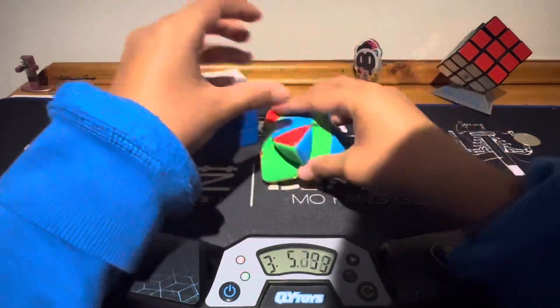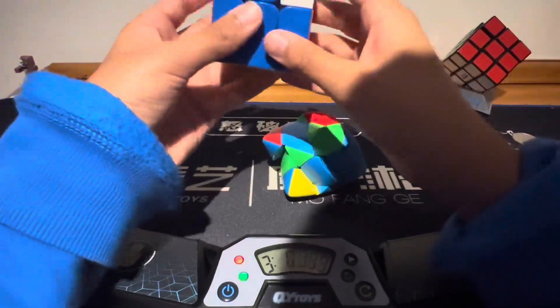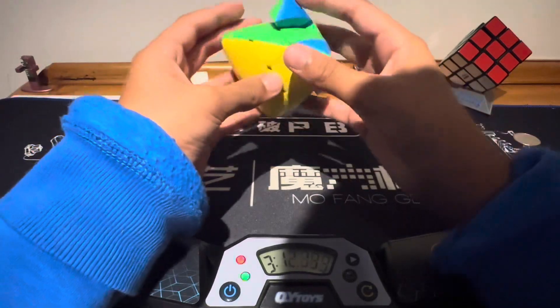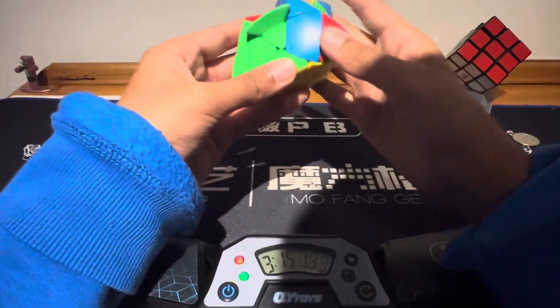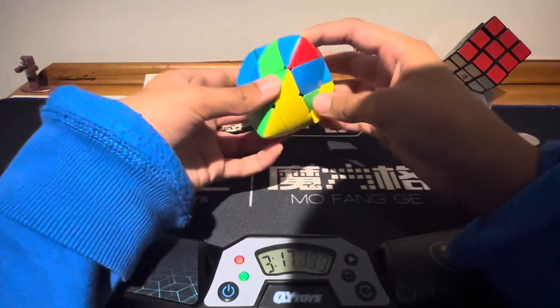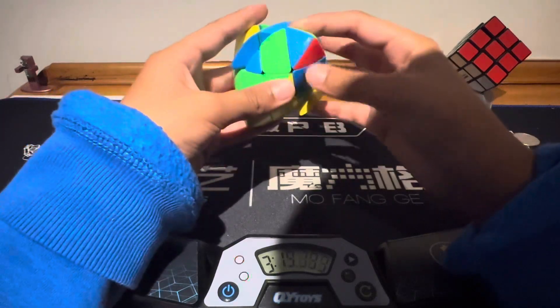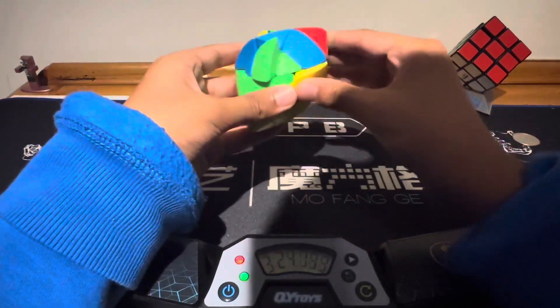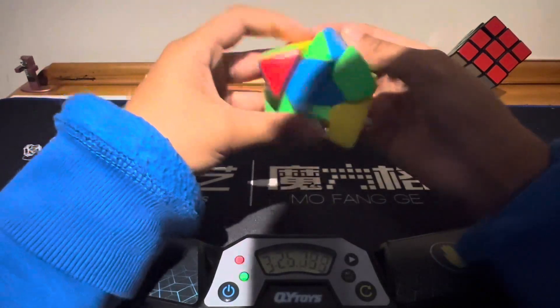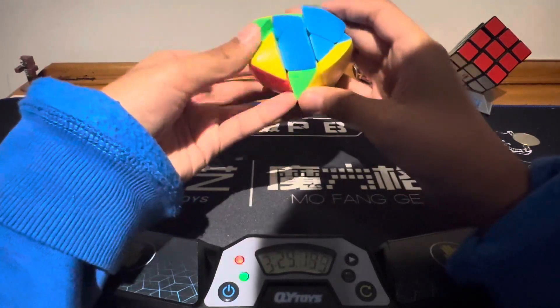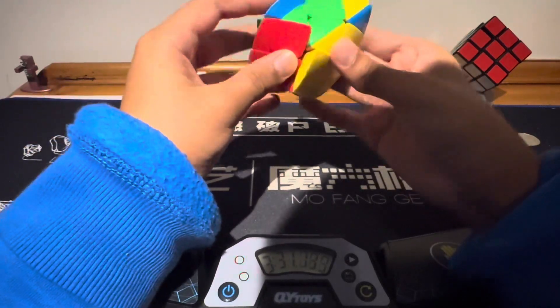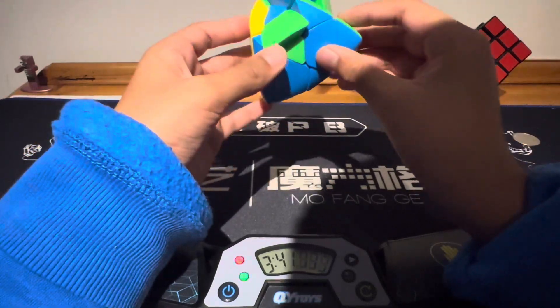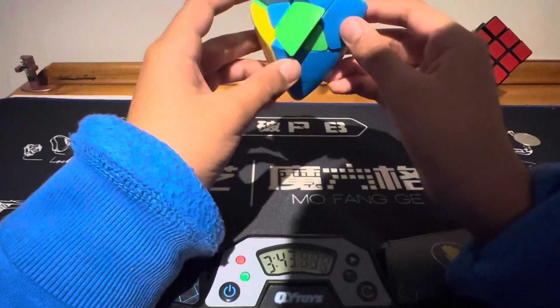So this got twisted like this, that means this also got twisted like this to make sense. So it means if I come here and then do... Okay, I'm just gonna do the simple anti-Sune, and then anti-Sune.